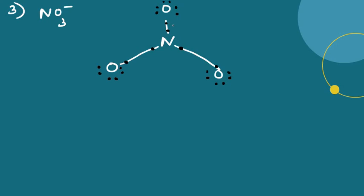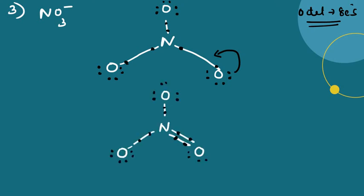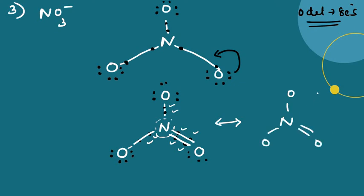For the central nitrogen atom, we count the electrons: 1, 2, 3, 4, 5, 6. Only six electrons are present, so the octet rule is not yet satisfied — eight electrons are needed. To complete the octet, electrons from a terminal oxygen drift toward the center, forming a double bond, and the resulting structure satisfies the octet for nitrogen in NO3 minus.